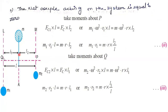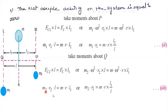Taking moment about point Q: Fc2·L = Fc·L1, which gives M2·R2·L = M·R·L1. Cancelling omega squared on both sides and rearranging gives the third equation with M2·R2 on the left-hand side. This completes case two.